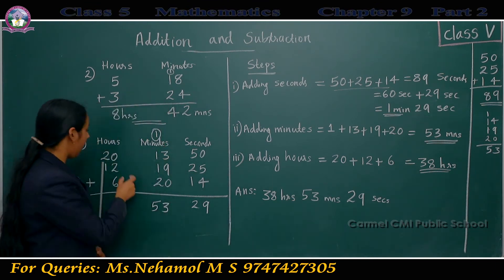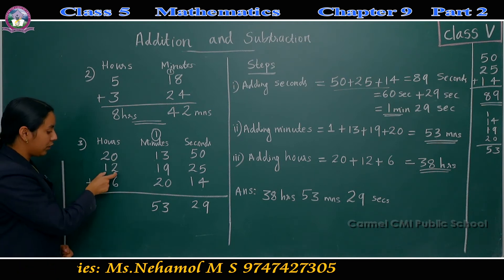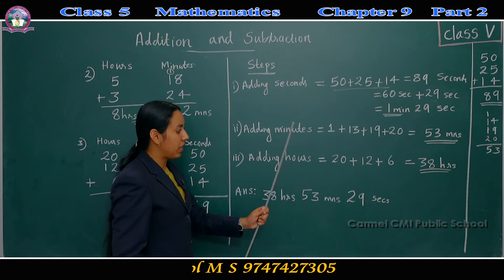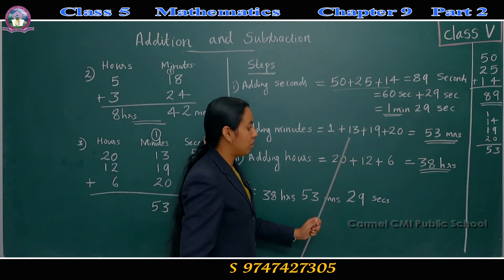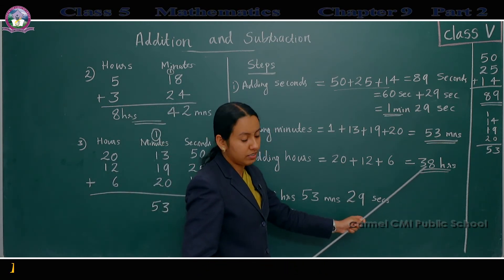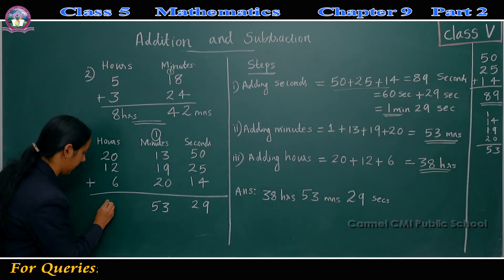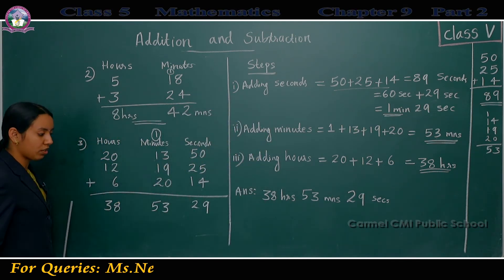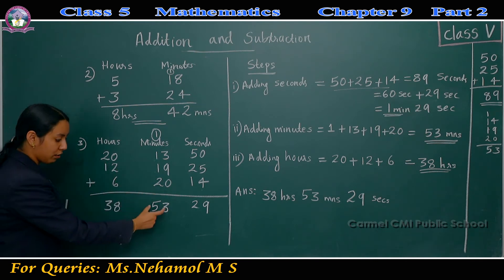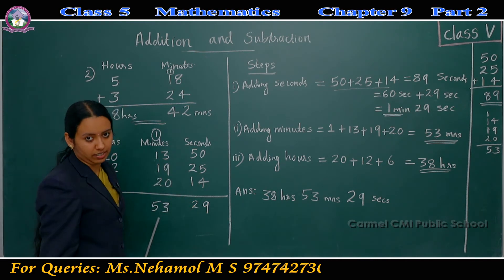Next step: adding hours. 20 plus 12 plus 6 is equal to 38. So the answer is 38 hours, 53 minutes, 29 seconds.